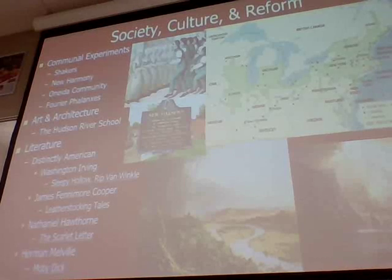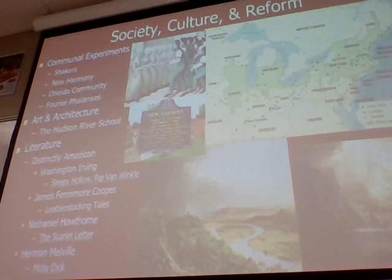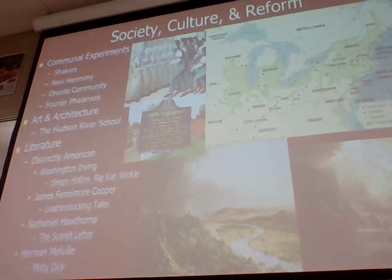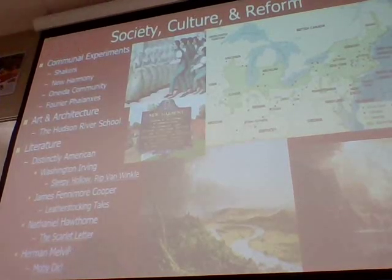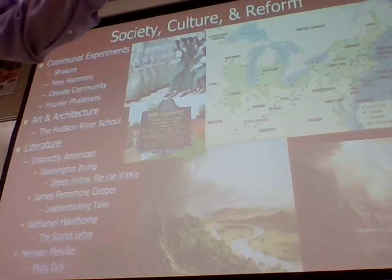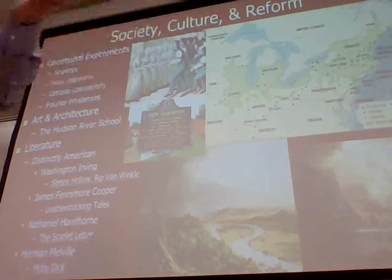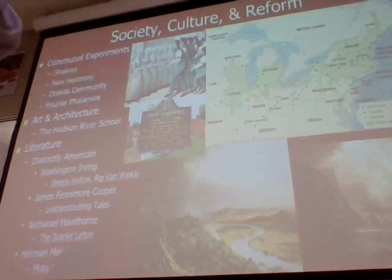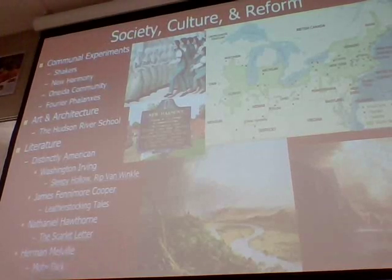That's it for the communal experiments. On a test, you don't really have to know each individual reason in depth. The only one that tends to show up separately is Brook Farm, which you need to associate with the Transcendentalists. For the others, just know they formed for secular and religious reasons, and that they formed to counter materialism and reject the direction society was developing in.